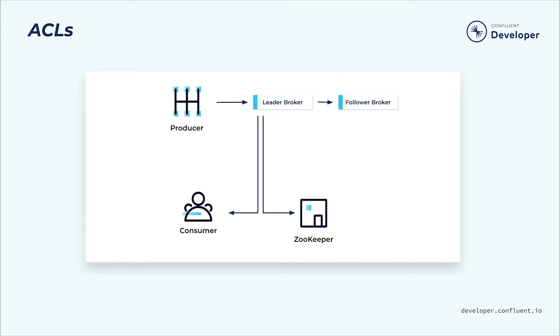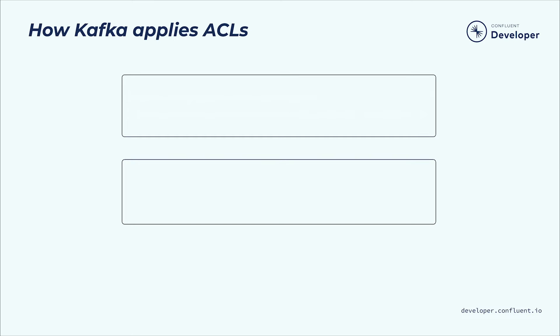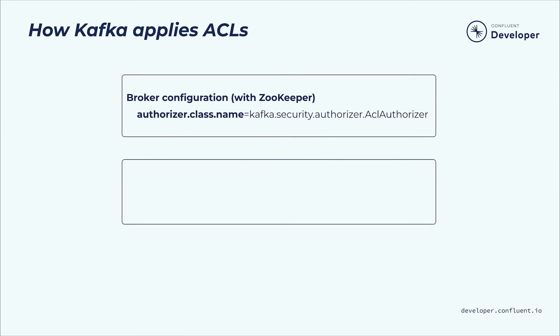Now let's look at how ACLs are used by Kafka when handling requests. When you create ACLs using the Kafka ACLs tool, the ACLs are stored in ZooKeeper and then cached in memory by every broker, so as to enable fast lookups when authorizing requests. Kafka uses a server plugin called Authorizer to actually apply ACLs to requests. The default authorizer is called ACL Authorizer, which you specify in each broker's configuration.